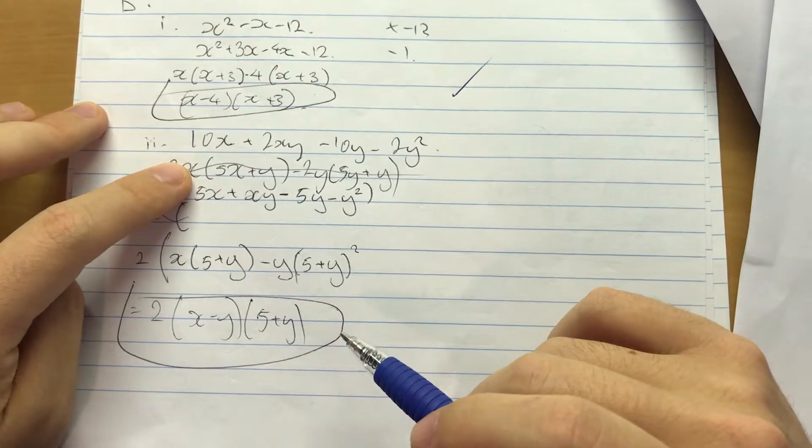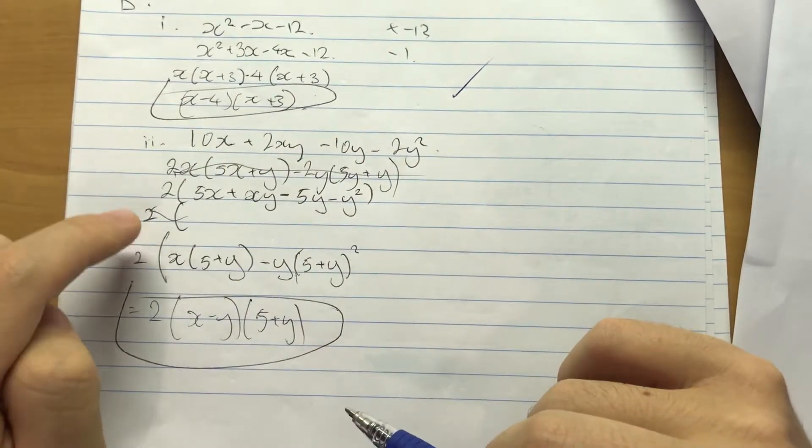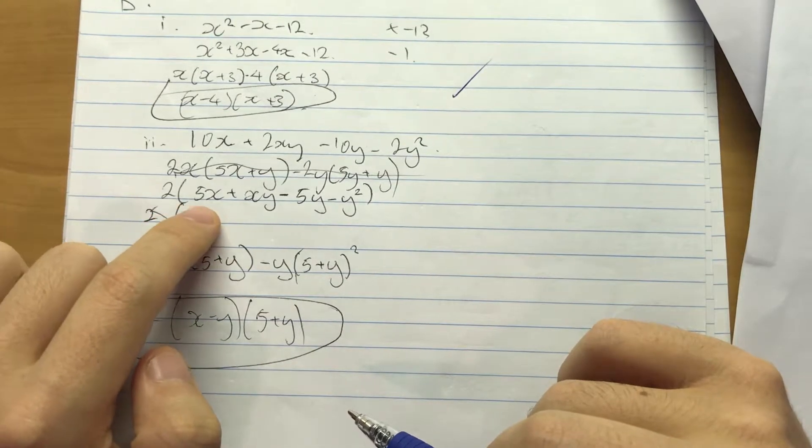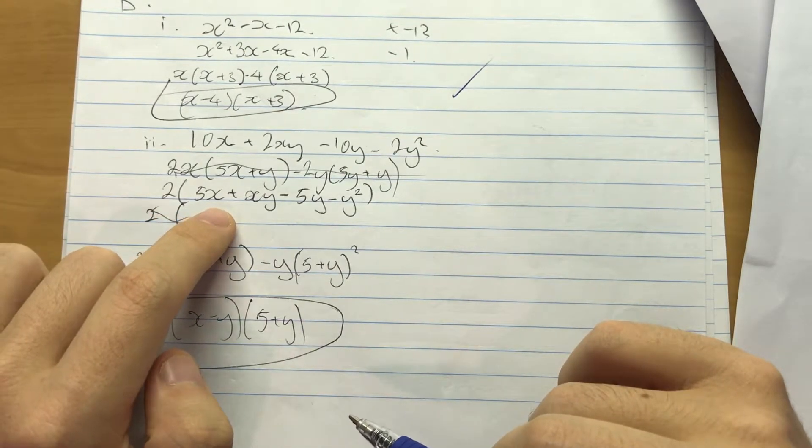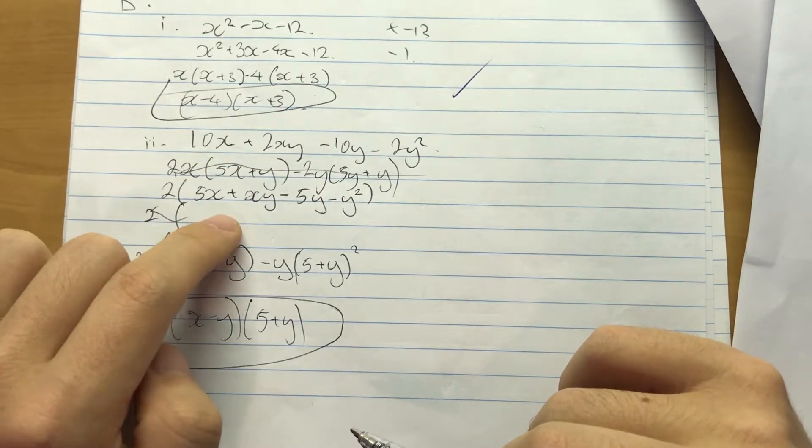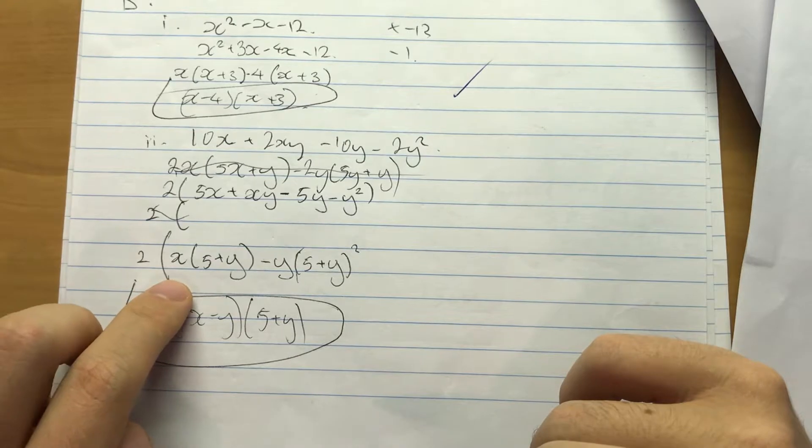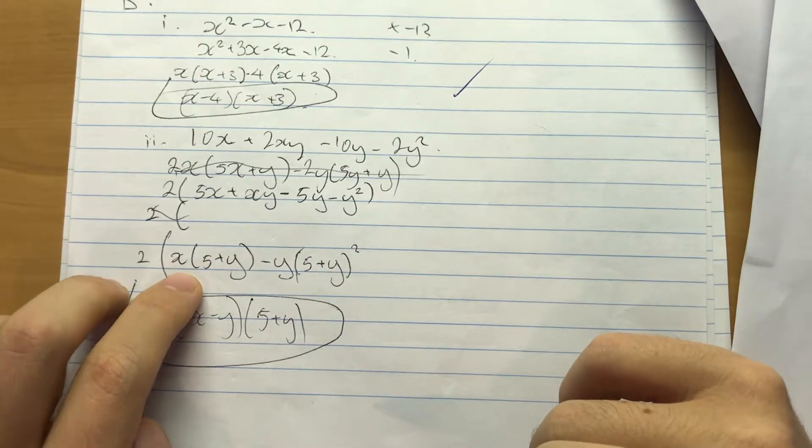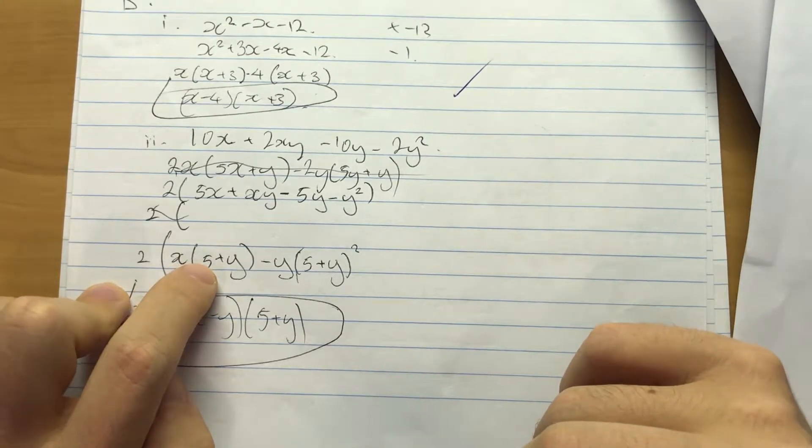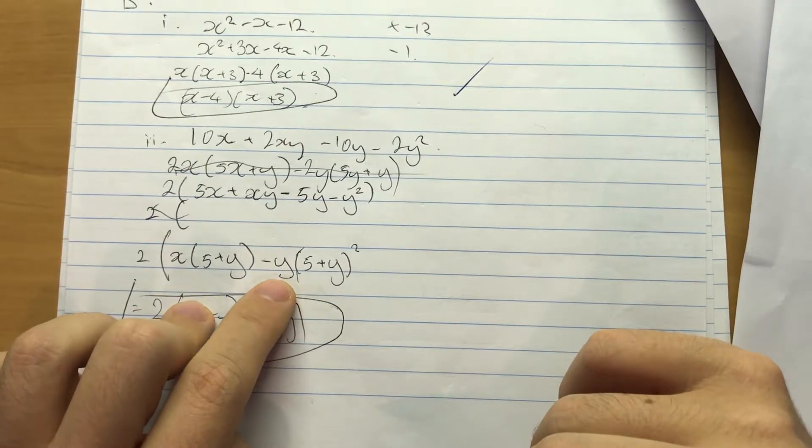I'm still trying to factorize. So you know when you've got 4 terms there's a chance you can pair them off and I think that's what's being done. So you pair off the first one. Now you get a common factor of 2 out the front, that's fine. Okay, so you pair off the first one with a common factor of x, and then you pair off the second one with a common factor of -y.